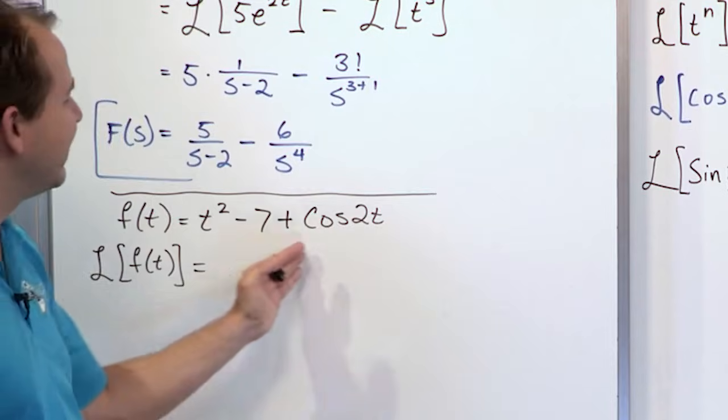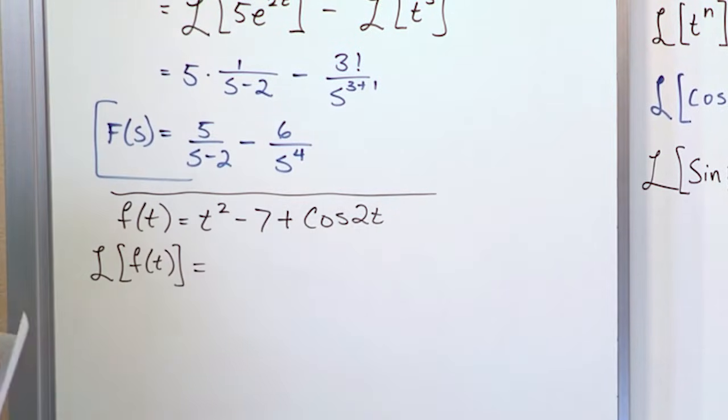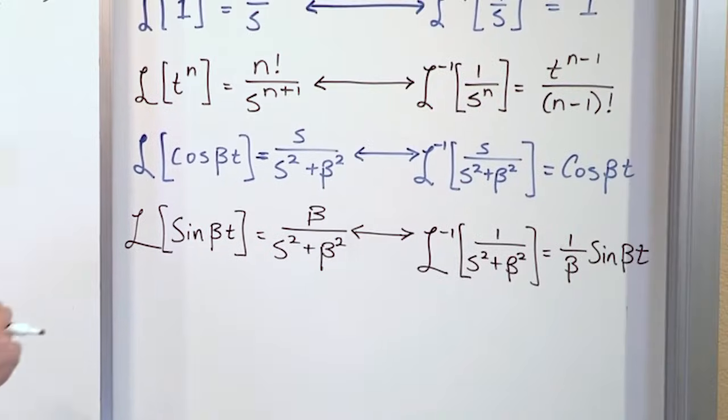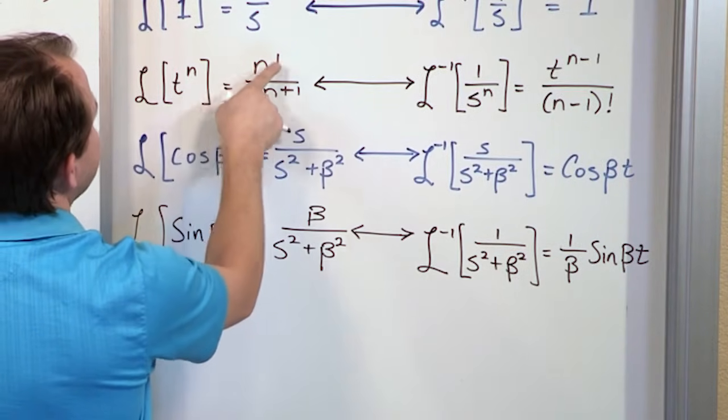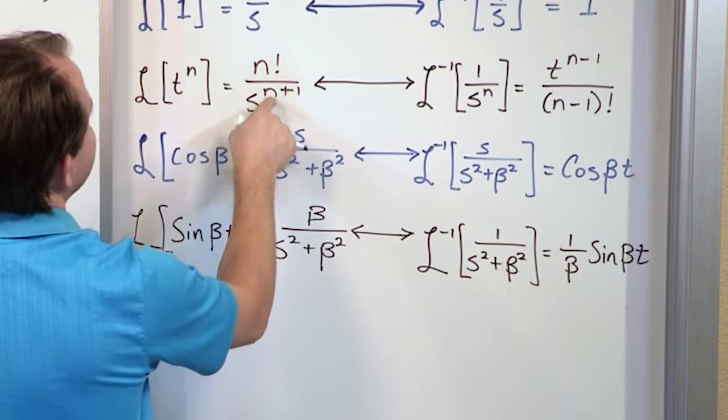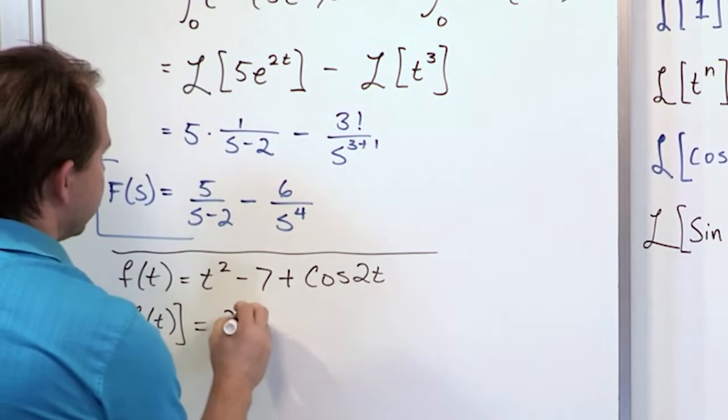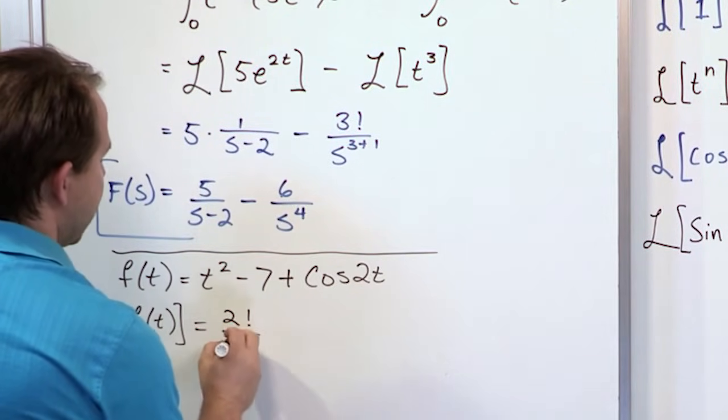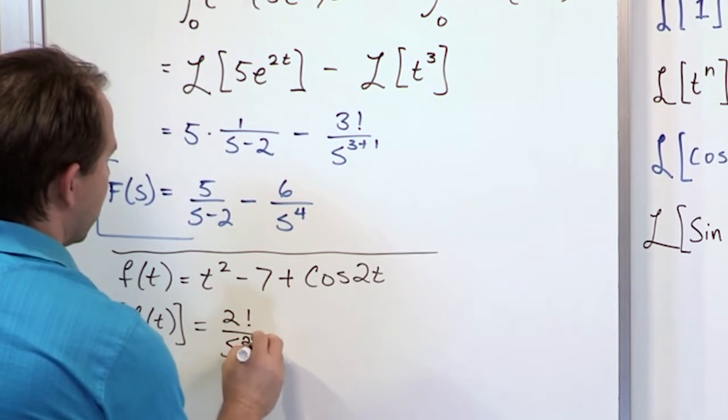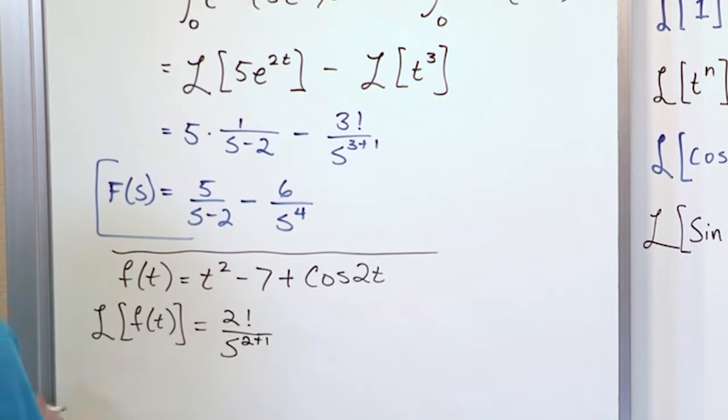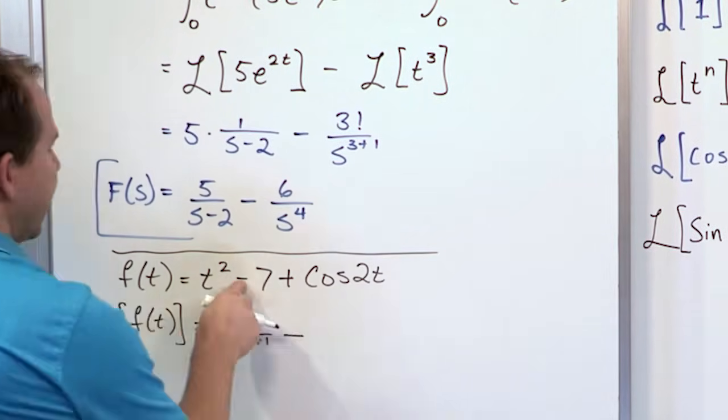So let's go on to the final problem in this lesson, which is going to be, what if I have the function f of t is t squared minus 7 plus cosine of 2t? How do we take the Laplace transform of this? So we say Laplace transform of f of t equals. Well, first of all, we have three terms. Here we have linked by a minus. Here we have linked by a plus. But from the linearity, you should now know that we just apply the Laplace transform to each little piece separately, just like we do in integration.